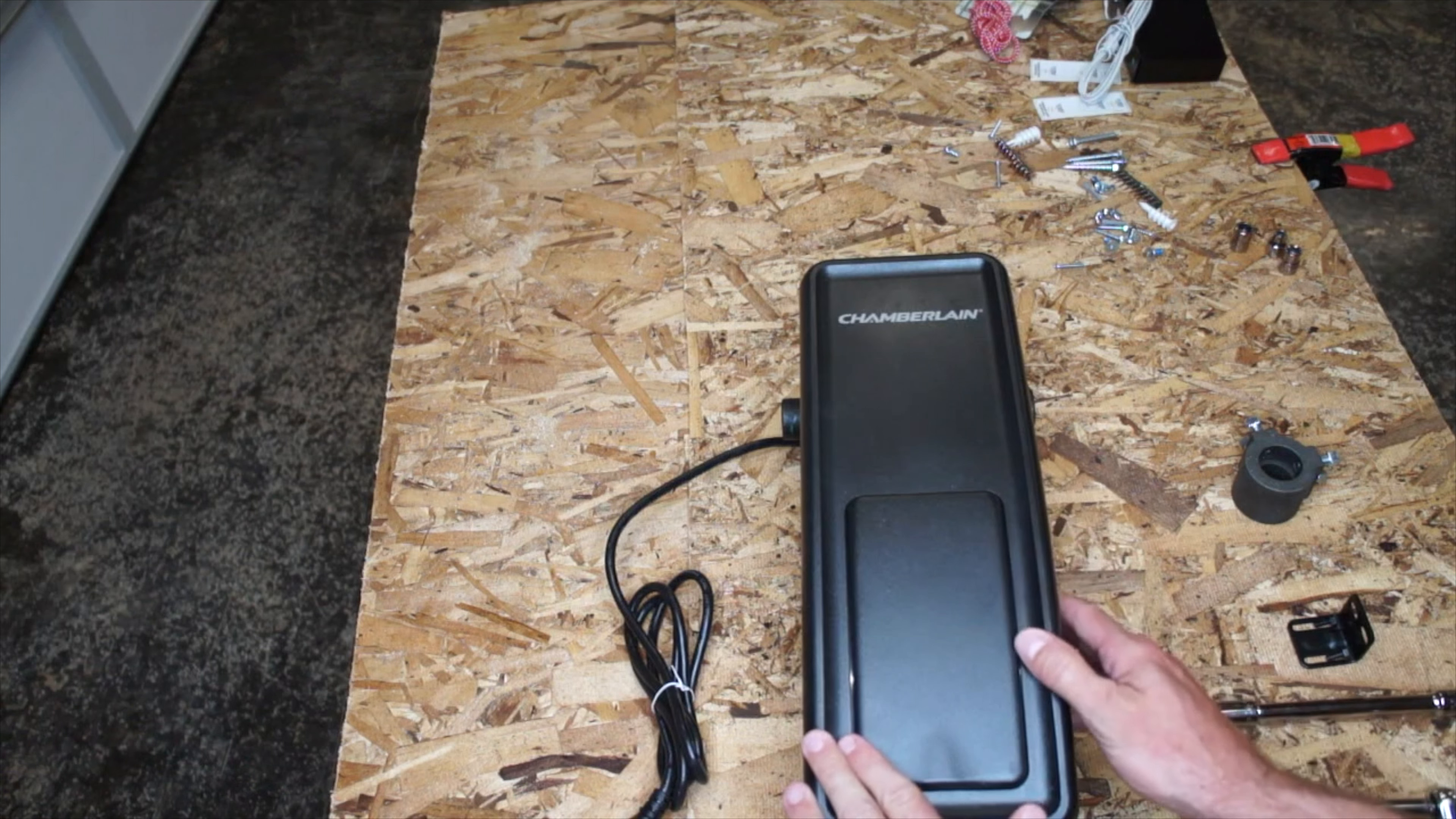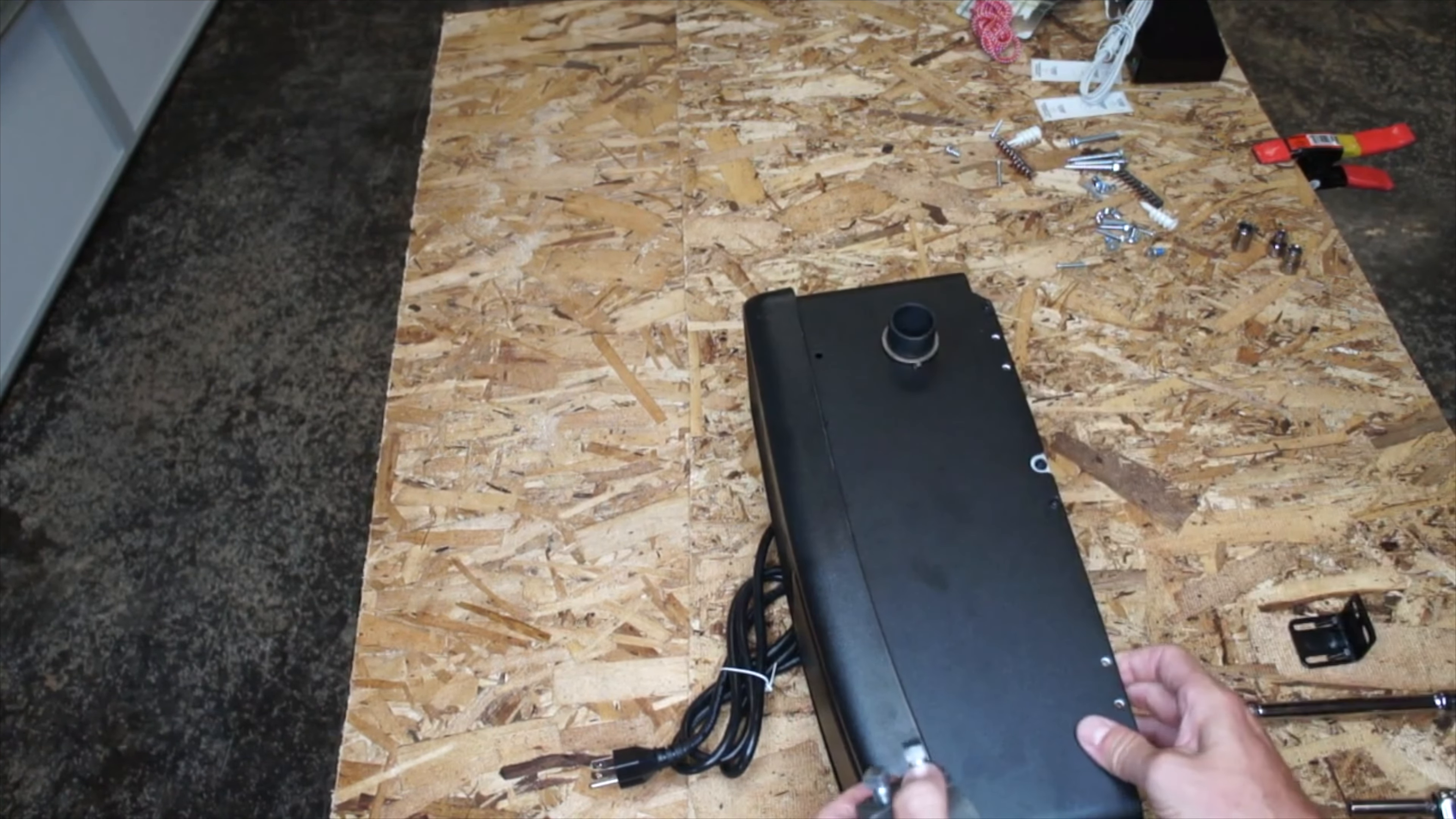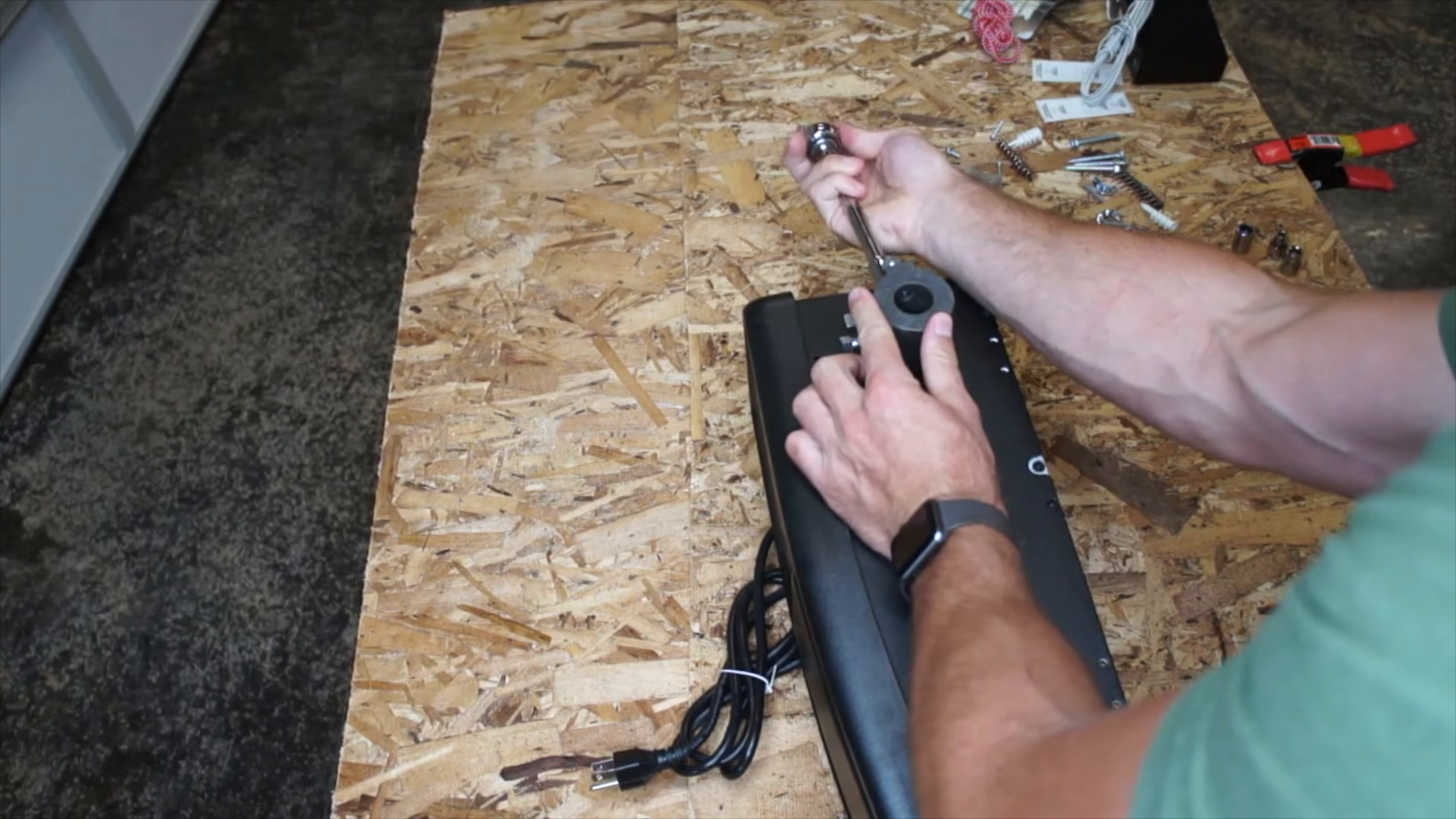Make sure that this will fit on your garage door. All of the requirements are on the Chamberlain website. I'm going to be mounting it to the left side of my garage door, so I'm going to be using this side of the opener. The first step is to put this collar on and set these set screws.